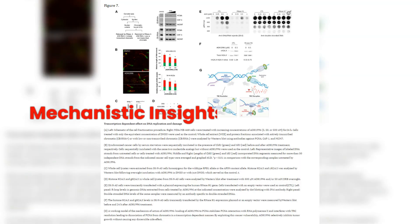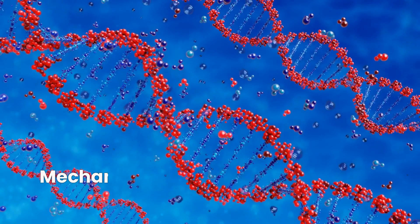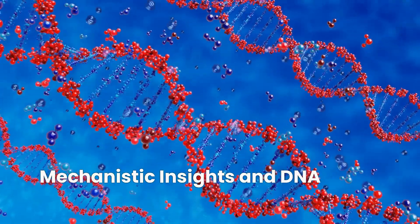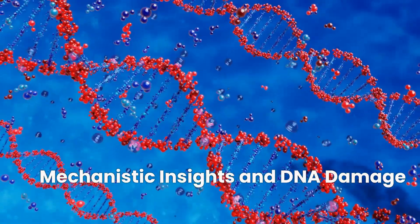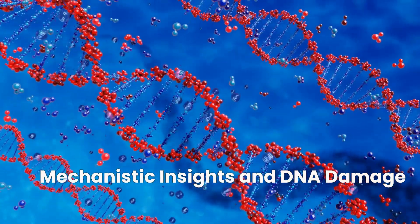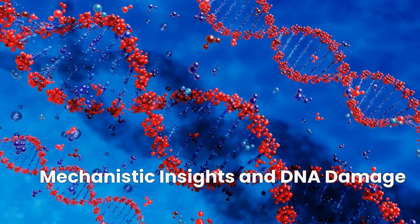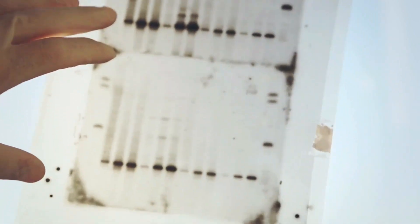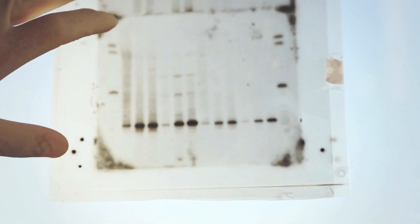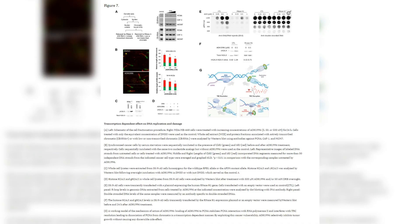Mechanistic insights and DNA damage. Lastly, image 7 presents a combination of cell fractionation, western blotting and fluorescence microscopy to demonstrate AOH 1996's effects on DNA replication and damage. This multifaceted approach gives us a window into the cellular chaos unleashed by the drug, leading to cancer cell demise.